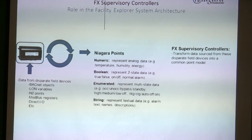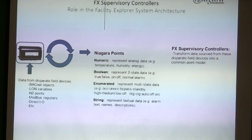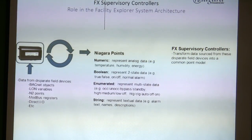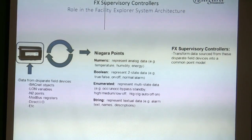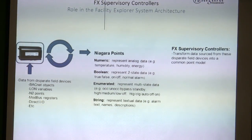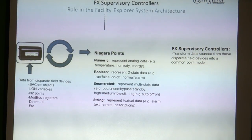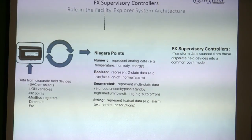This is important if you're getting into programming: there are different point types — numeric, boolean, enumerated, string, and two of each. So if you had a BACnet VAV controller with a setpoint, that would get pulled up into the Jace and turned into a numeric writable point.